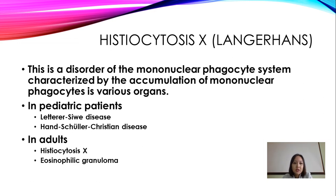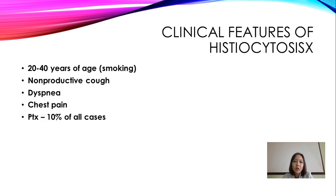Histiocytosis X is a disorder of the mononuclear phagocyte system characterized by the accumulation of mononuclear phagocytes in various organs. The disease occurs in childhood and in adults. In pediatric patients we find diseases like Letterer-Siwe disease and Hand-Schüller-Christian disease. In adults it is called Histiocytosis X or eosinophilic granuloma.